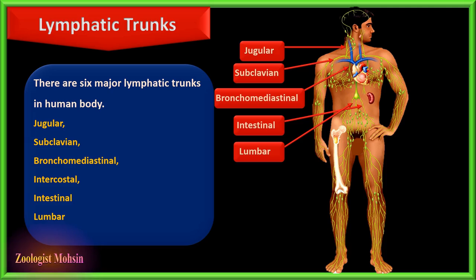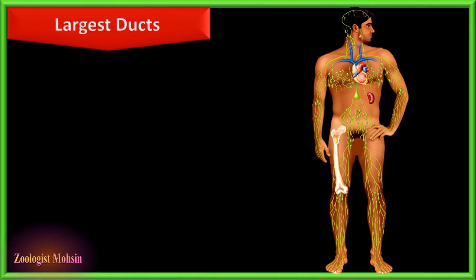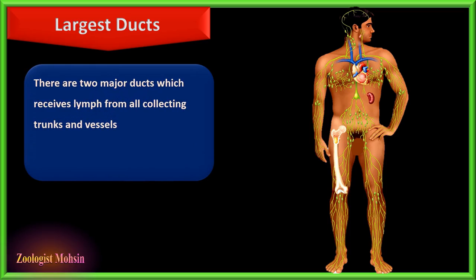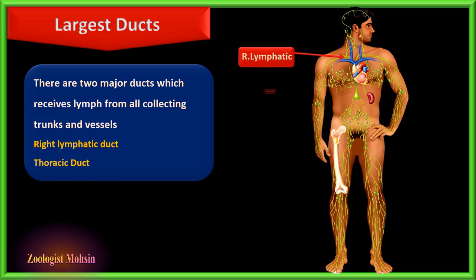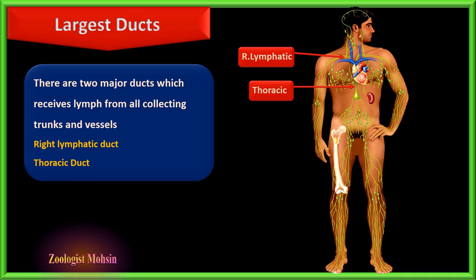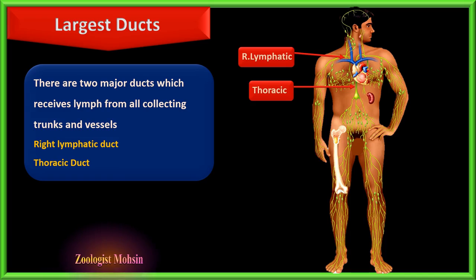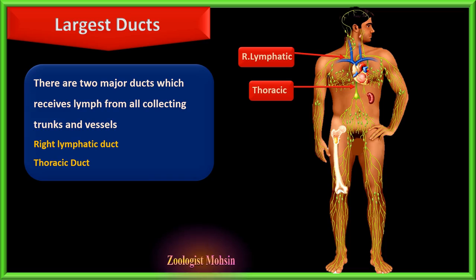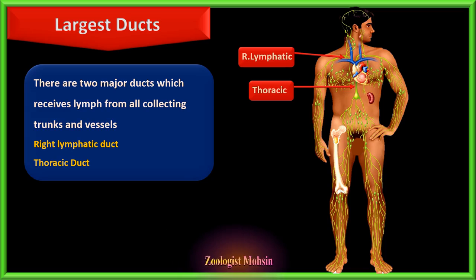These trunks empty into the largest lymphatic collecting ducts: the right lymphatic duct and the thoracic duct. The right lymphatic duct collects fluid from the right jugular, bronchomediastinal, and subclavian trunks. The thoracic duct on the left is larger and longer, collecting lymph from the left bronchomediastinal, left subclavian, left jugular, and the rest of the body. It may also be called the left lymphatic duct.